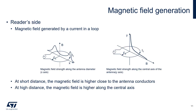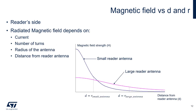To generate a magnetic field, we simply pass a current through a loop. At short distance, the magnetic field is higher closer to the antenna conductors, and at high distance, the magnetic field is higher along its central axis. The amount of radiated magnetic field depends on several factors: the current applied to the loop, the number of turns in the antenna, the radius of the antenna, and the distance from the reader antenna. A small reader antenna has higher field strength very close to it, while a larger reader antenna normalizes this over the distance.